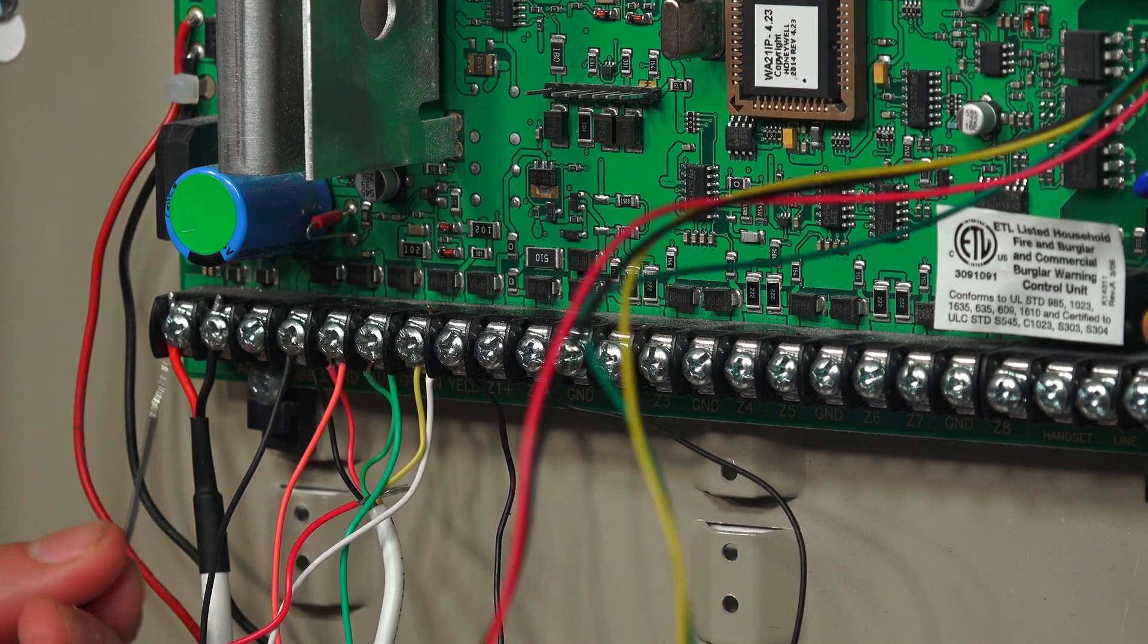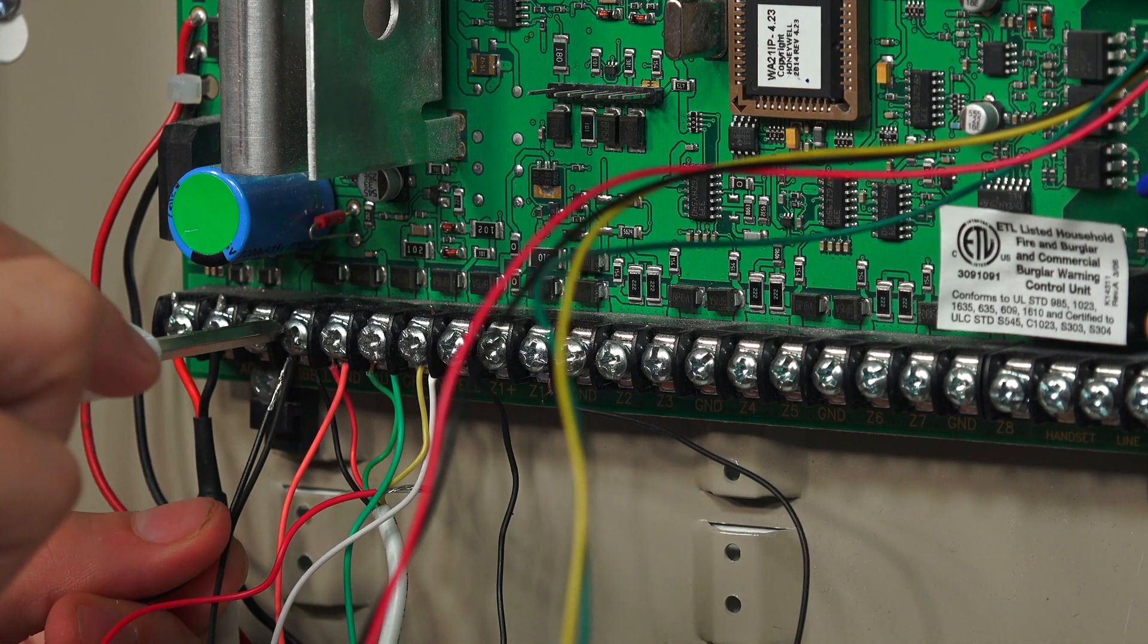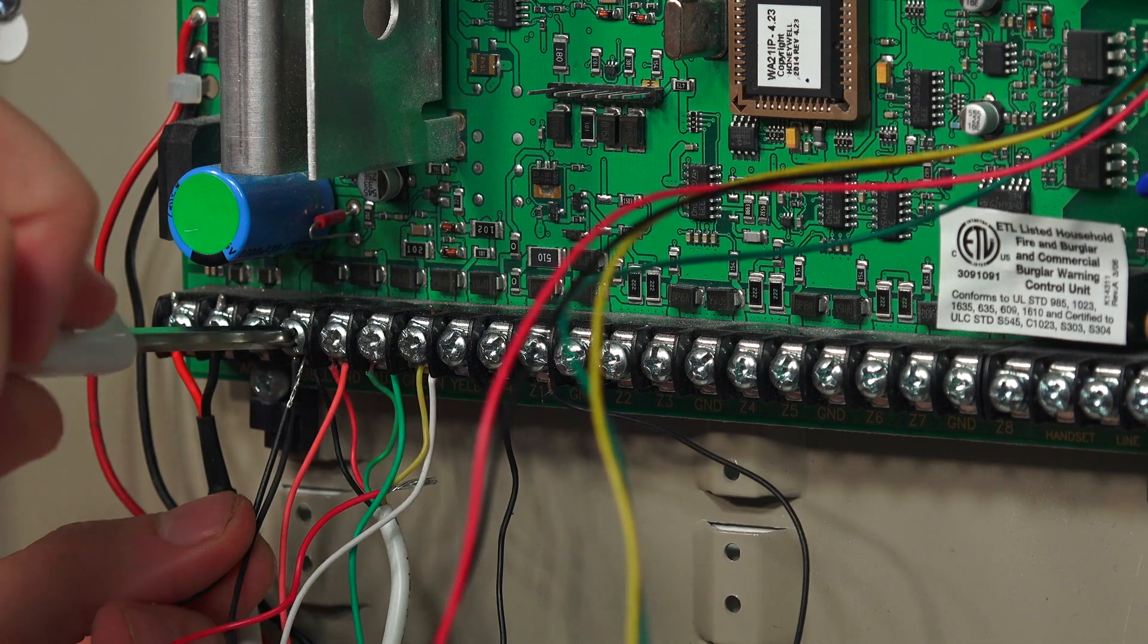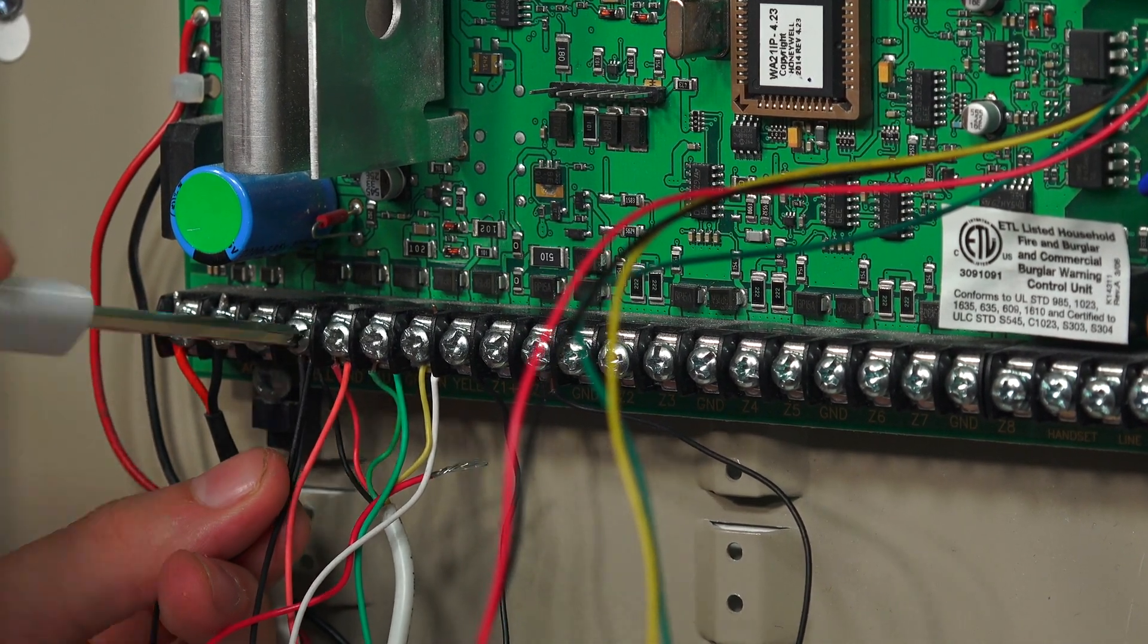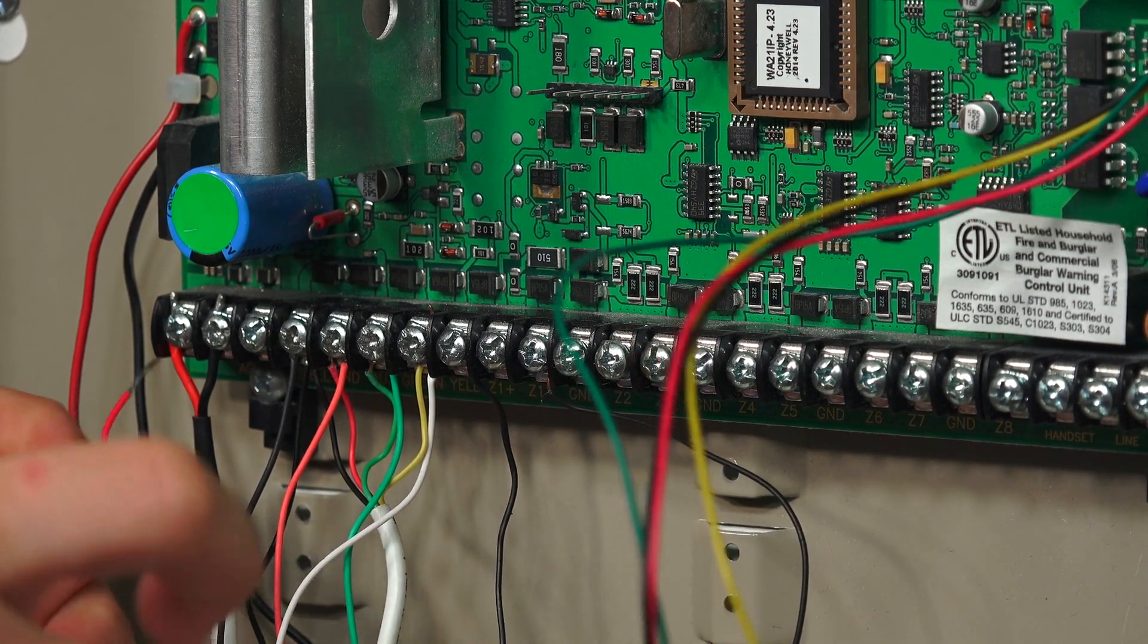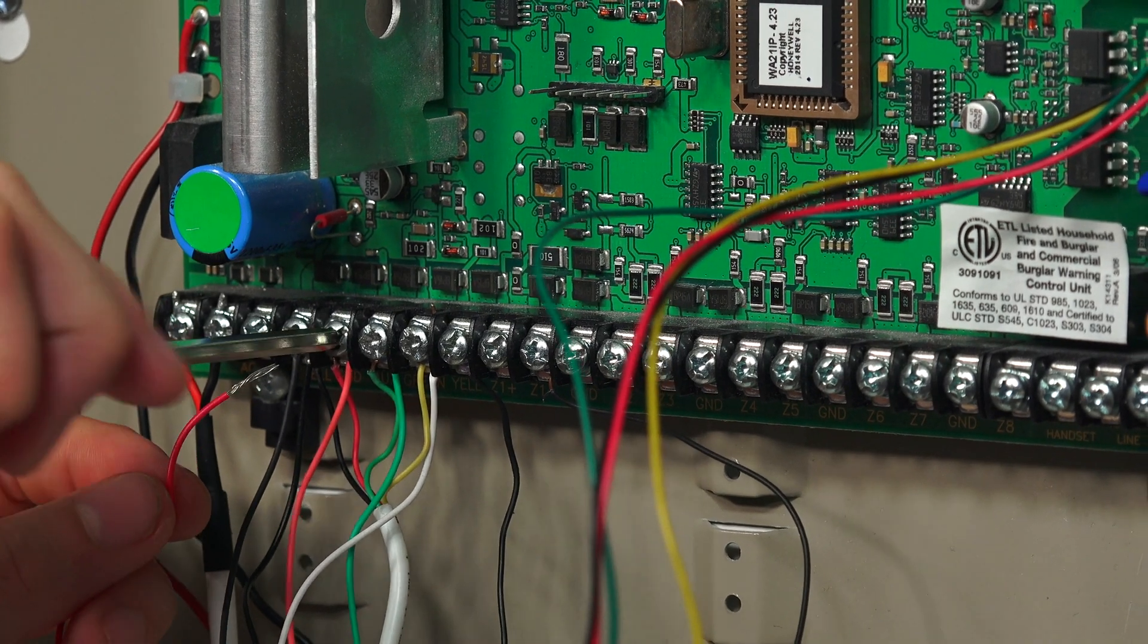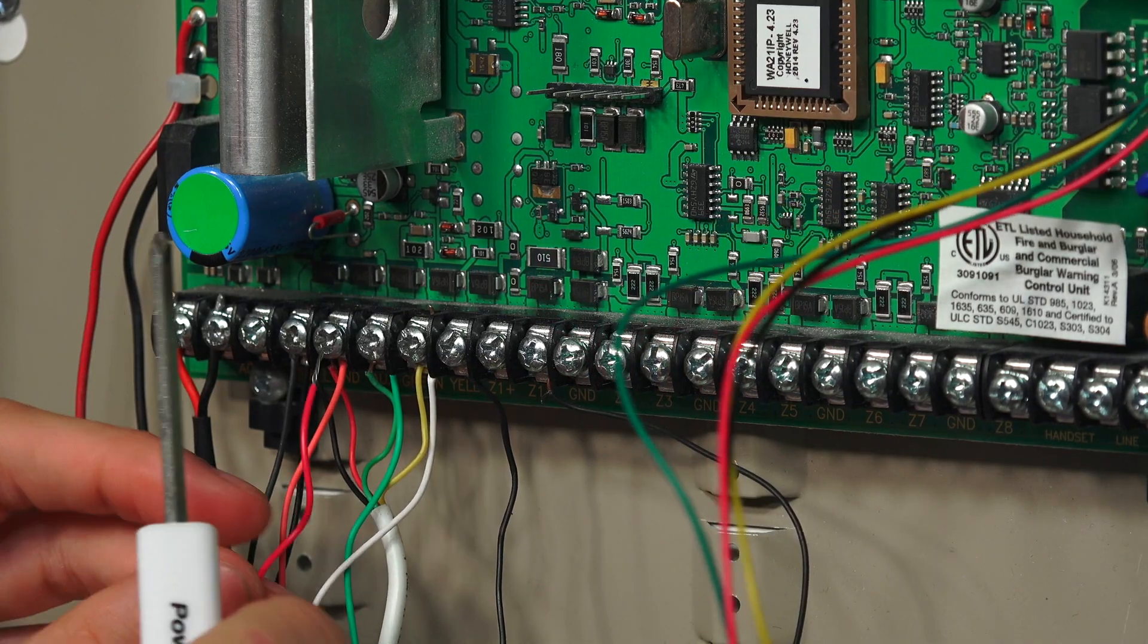So we're going to begin doing our four-wire connection. We're going to start with the black wire, which is for negative power, also known as the ground connection. Then we have the red wire, which is for positive power. The black wire went to terminal four, and the red wire is going to terminal five.